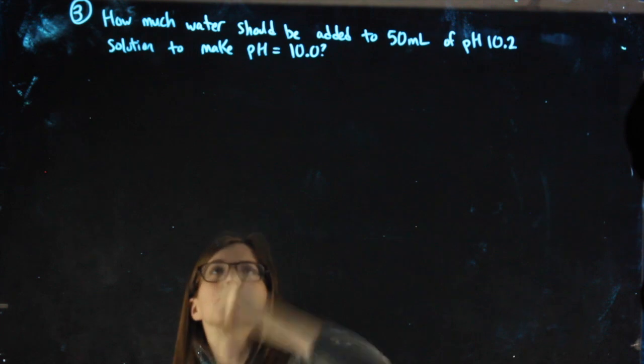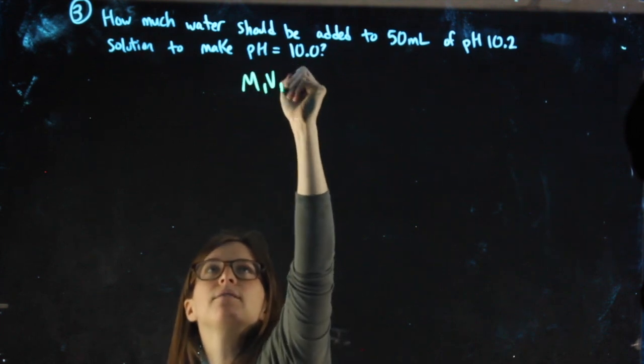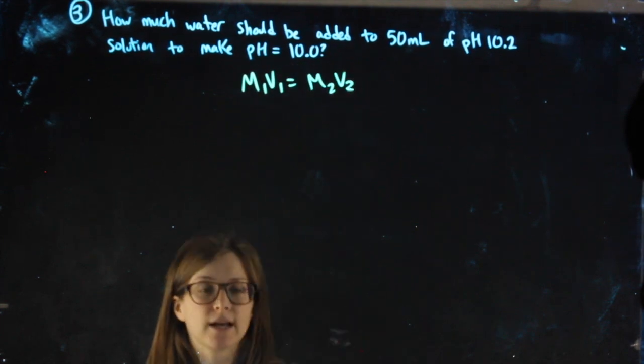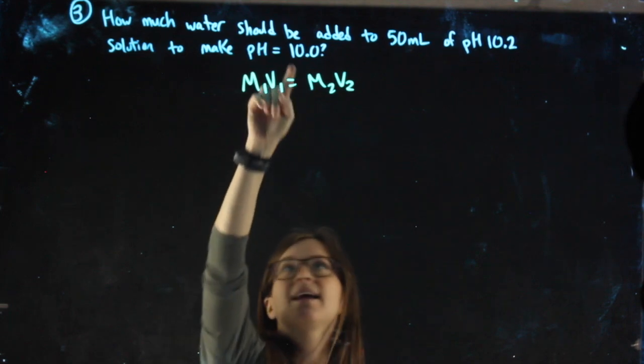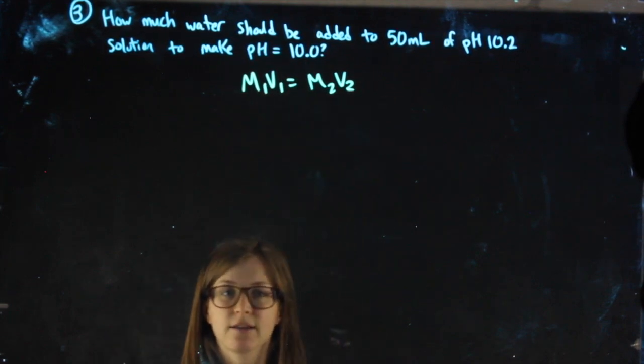For dilution problems, I use M1V1 equals M2V2. Realize the M's are molarities. I can't just plug pH in for molarity, they're not the same thing.